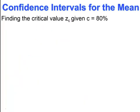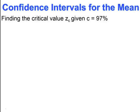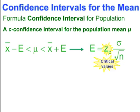Pause and try. You should have gotten a critical value of negative 1.28 or positive 1.28. Pause and try. You should have gotten critical values of negative 2.17 or positive 2.17. Here is the formula for a confidence interval for the population: the interval is made up of the sample mean minus or plus the margin of error E.